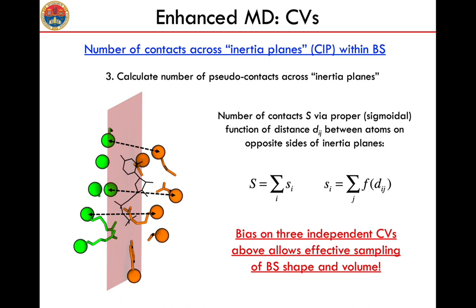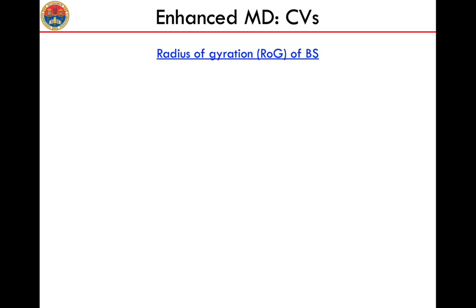In particular, you enhance this breathing across three independent directions, and then you enhance the variation in shape along all three directions of space. In addition to this, we also force the enlargement or collapse of the binding site by acting on the radius of gyration of the binding site.